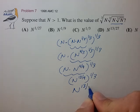And finally, n to the 13/27, for choice D.